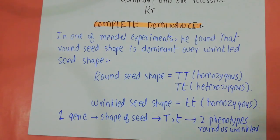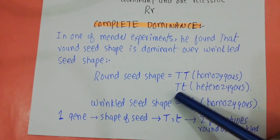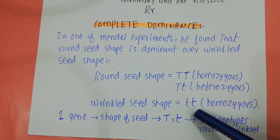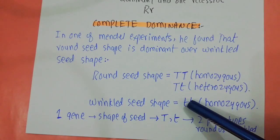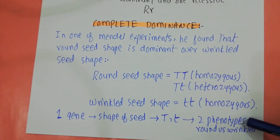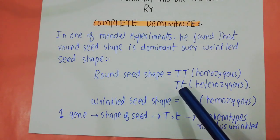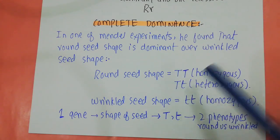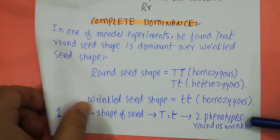In this example, you can see three kinds of genotype: capital T capital T, capital T small t, and small t small t. But these three genotypes only code for two phenotypes. The reason is that the round seed shape can express itself in two different genotypes, and both of those genotypes code for a single phenotype. Now this is not the case in incomplete dominance.